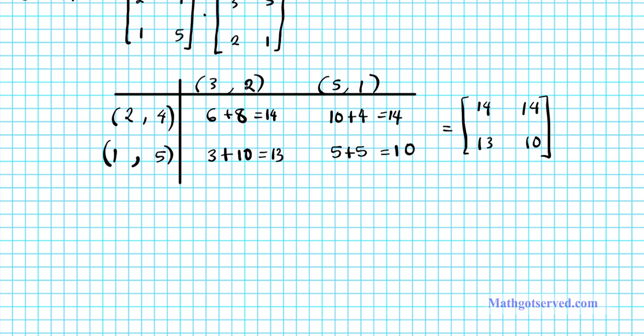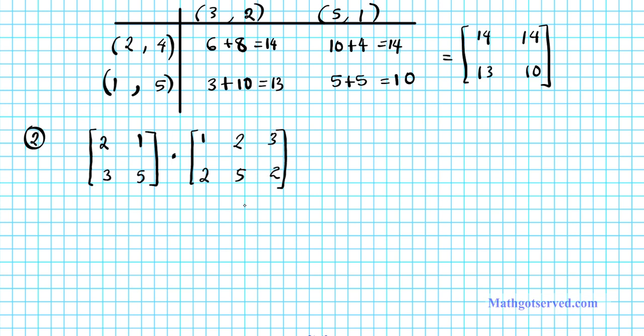Alright, let's take a look at another example, just to make sure we have this down. Problem number 2. So let's find the product of the following matrices: 2, 1, 3, 5, times 1, 2, 2, 5, 3, 2. Now, first of all, we don't just blindly multiply. We have to determine if the product is defined. So let's go ahead and determine that real quick. This is a 2 by 2 matrix. And this has 2 rows and 3 columns, 2 by 3.